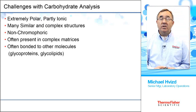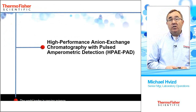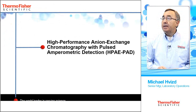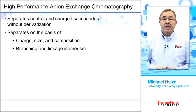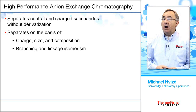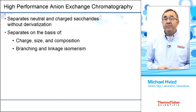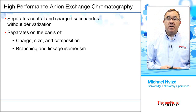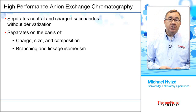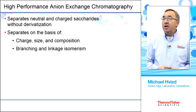Next, we'll look at the technique called high-performance anion exchange chromatography with pulsed amperometric detection. This technique was developed through our column technology from the Sunnyvale R&D group, along with detector technology developed by Iowa State University in the mid-80s. Our column technology allows us to separate neutral and charged sugars without derivatization — that's very important because other techniques require a long, drawn-out derivatization process. We can separate these sugars on the basis of charge, size, composition, and even separate things based on their branching or linkage isomerism.